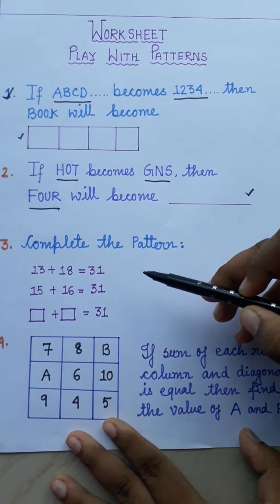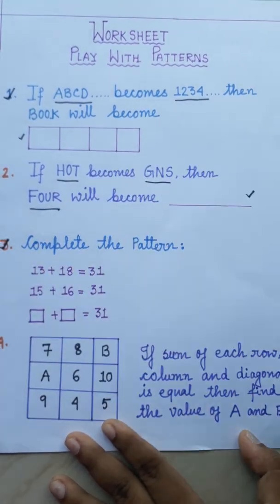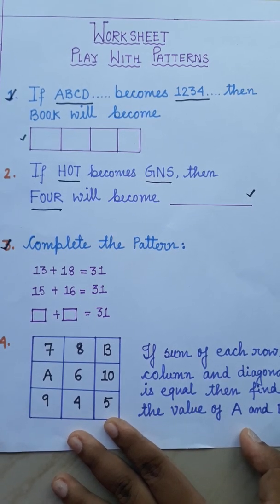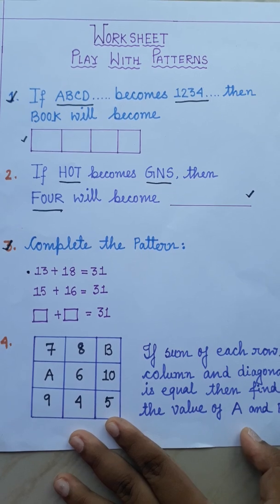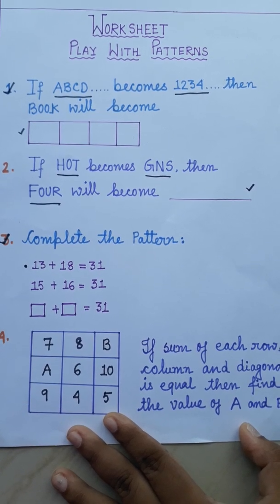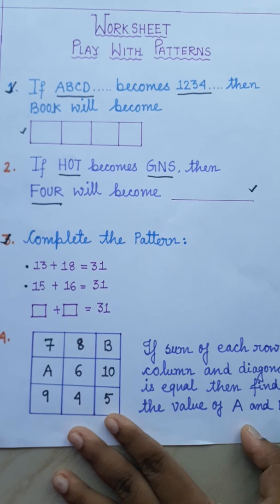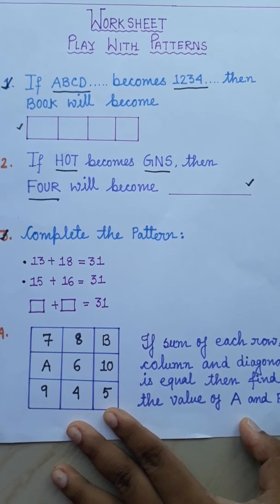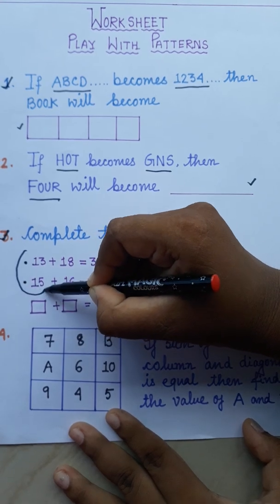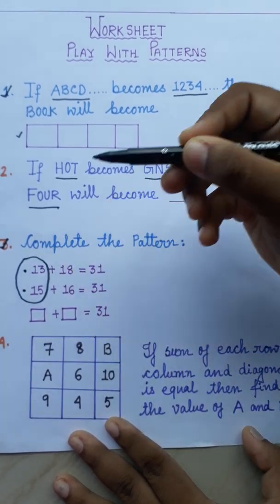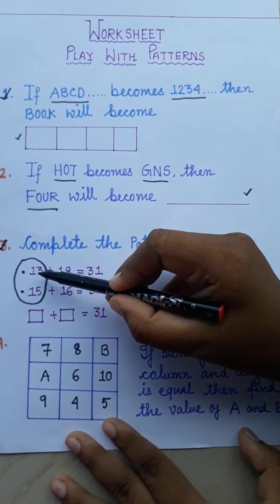Next, complete the pattern. Here you have to complete the pattern. You can see a pattern here. In the first one, what is written? 13 plus 18 equals 31. In the next one, it is written 15 plus 16 equals 31. At first, you will see this line, how the numbers are increasing. The numbers are increasing by 2.